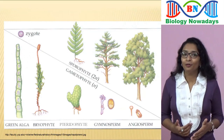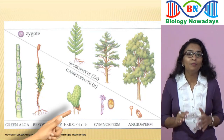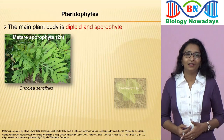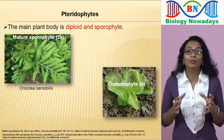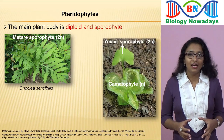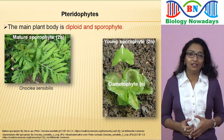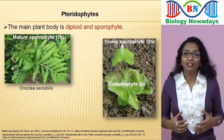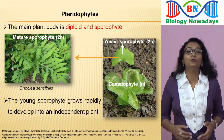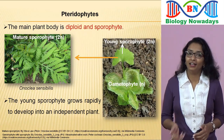But in pteridophytes, the gametophyte is reduced to a small structure called prothallus. At first, the young sporophyte remains attached to the gametophyte and receives nourishment from it. But the sporophyte grows rapidly and soon develops into an independent plant, while the gametophyte dies off.